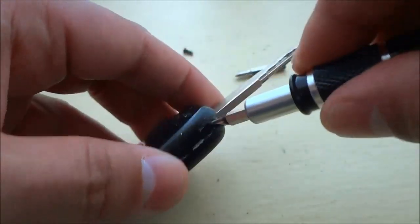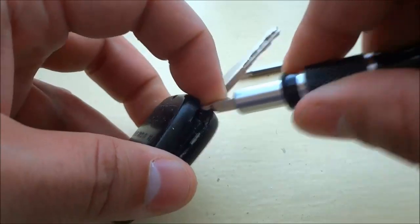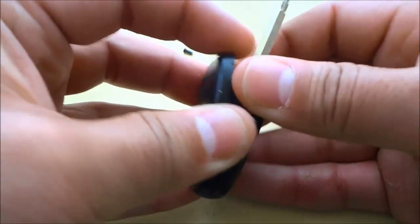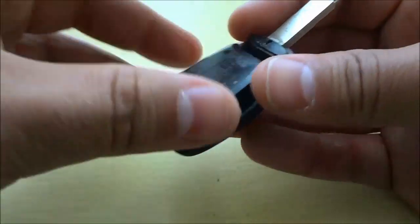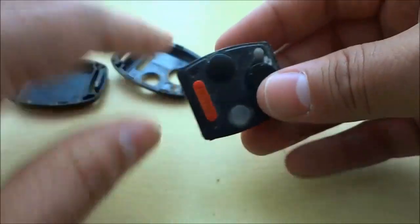Then you can simply work the flathead in and use your fingers, basically a combination of the flathead and your fingers to pry apart both pieces of the case. That will expose this piece right here and the battery is in this piece.